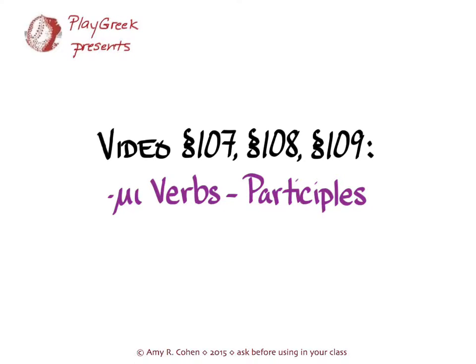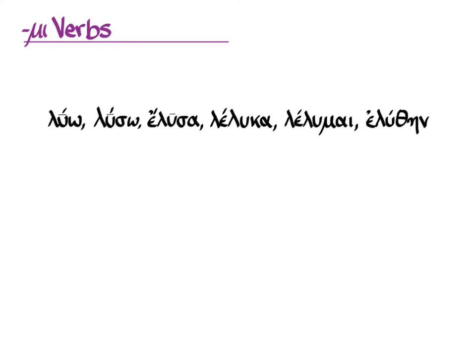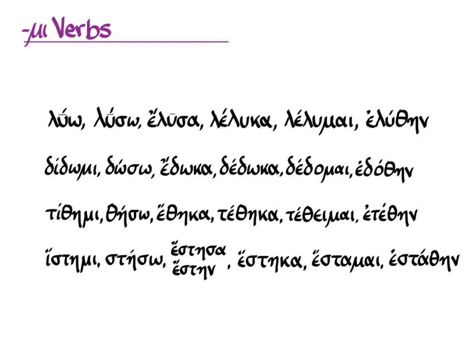This video covers sections 107, 108, and 109 in Hanson and Quinn's Greek intensive course, and it covers the participles of the mi-verbs. You can find this in Hanson and Quinn on pages 395 to 397. We have been talking in the last few videos about mi-verbs, otherwise known as athematic verbs, which differ from our familiar thematic verbs represented by luo in that in some of their principal parts, specifically the first and the third, and for histemi also the fourth, they have special rules about the kind of endings to add and which stems to put them on.